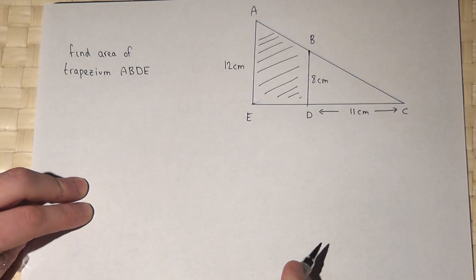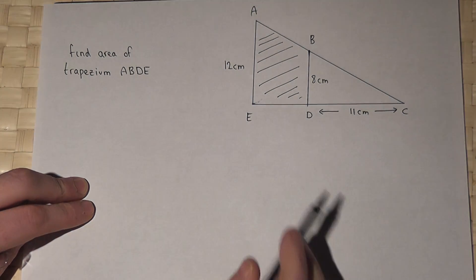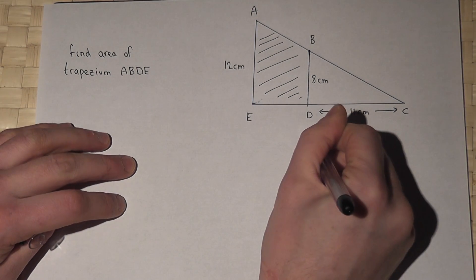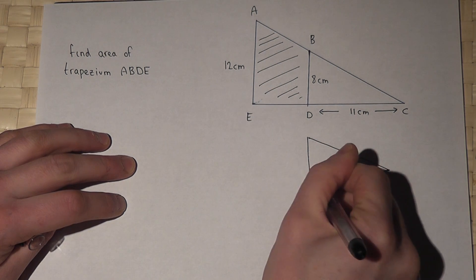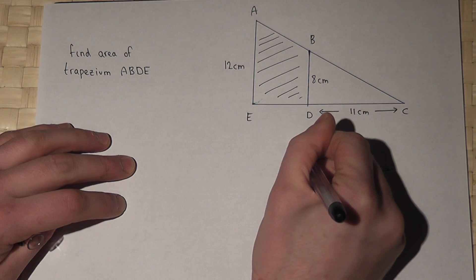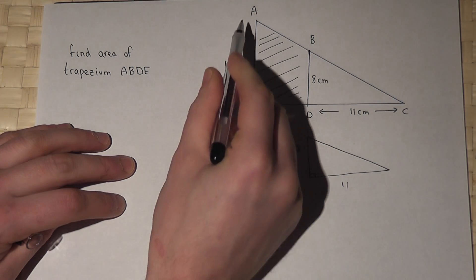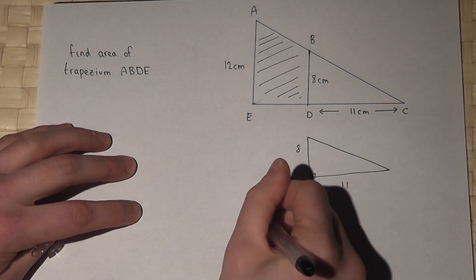Now then, the method here is to see this as two triangles. We've got the smaller triangle, which is 11 and 8, and we have the larger triangle around the outside.